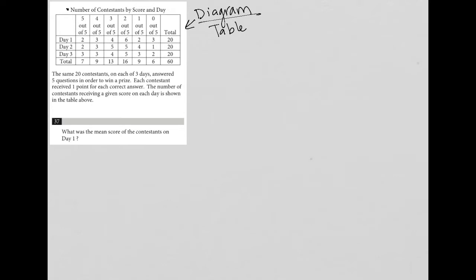The title of the table says number of contestants by score and day. So it looks like our days are the rows, day one through three. And then our scores, five out of five, four out of five, all of our scores are the columns. And then we have a total column and a total row.